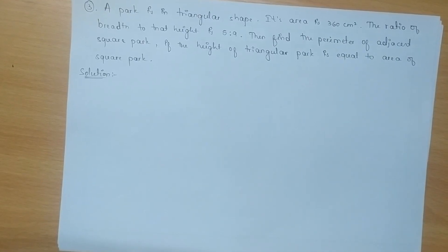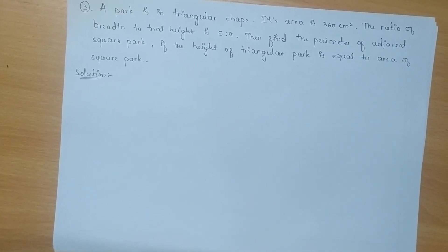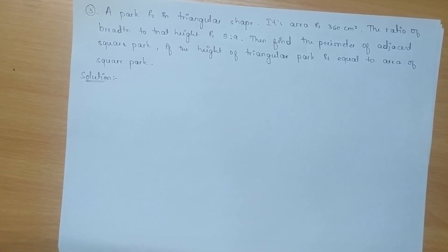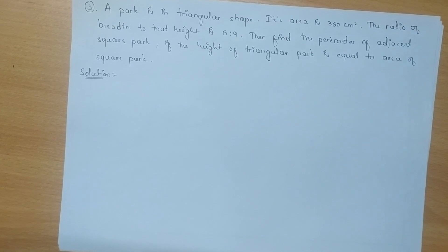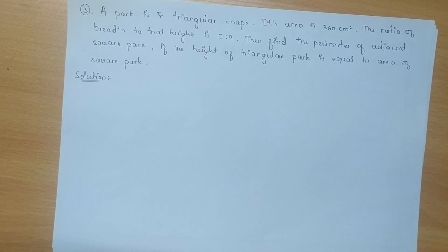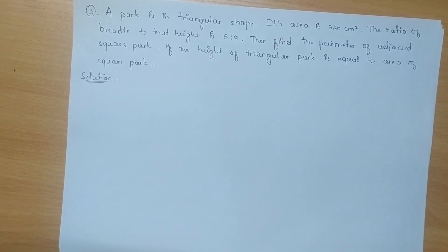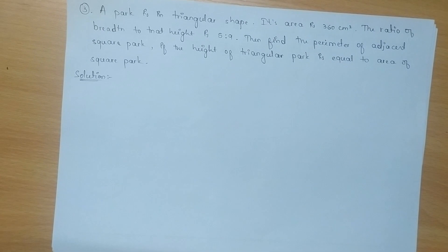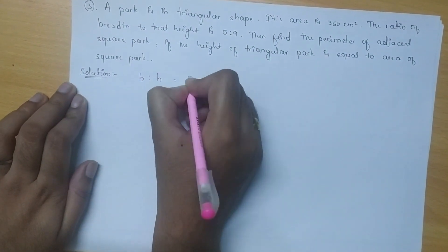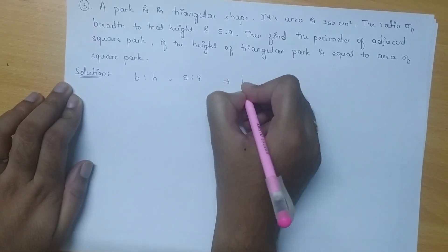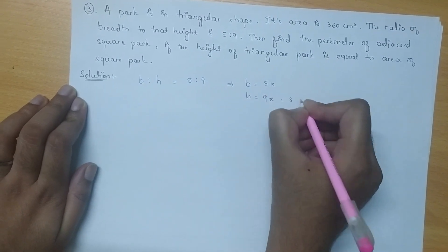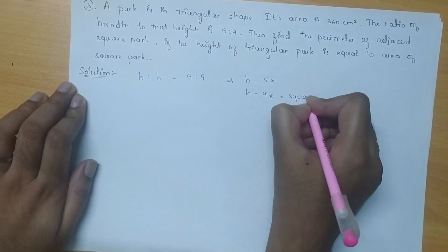A park is in a triangular shape. Its area is 360 cm square. The ratio of breadth to height is 5 is to 9. Find the perimeter of the adjacent square park if the height of the triangular park is equal to the area of the square park. The ratio of breadth and height is 5 is to 9, meaning breadth will be equal to 5x and height will be equal to 9x, which is also the square park's area.